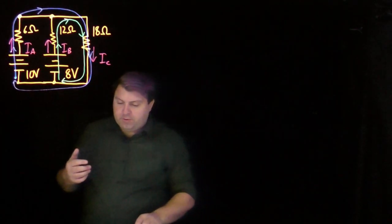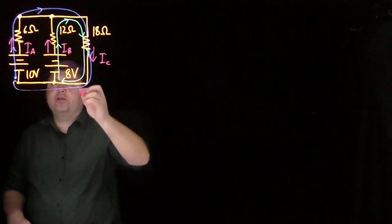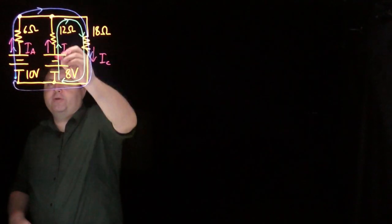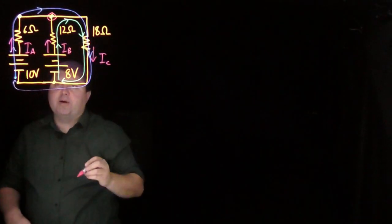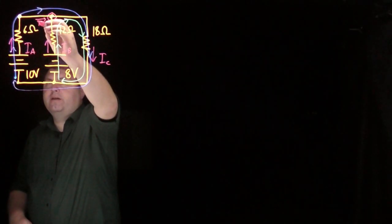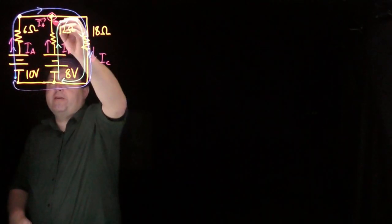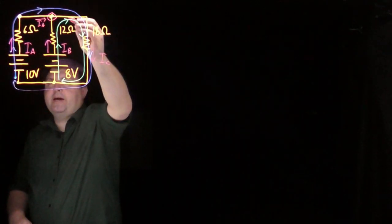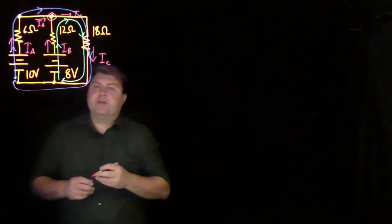Now that I have my loops, I can also take a look at my junction. So I can look at this point or this point, this point seems nice, we like the tops a little bit better. So I can see that I have Ia coming into it, I have Ib coming into it, and then I have Ic coming out of it.